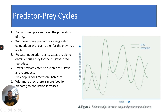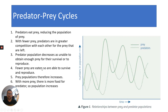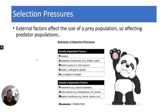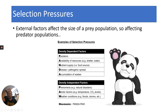In an exam they might ask you to describe graphs and talk about this lag between prey and predator. Now, this isn't straightforward — there are other external factors that are going to affect prey and predator populations, and those are called selection pressures. External factors affect the size of the prey population and therefore the predator population. In AQA you don't need to know about density-dependent and density-independent factors, but it's worth knowing what other factors affect predator-prey relationships, such as nutrient supply, disease and pathogenic spread, accumulation of waste if populations are too large, natural disasters, extremes of weather, and abiotic factors. You can remember the selection pressures through the mnemonic 'panda paw.'